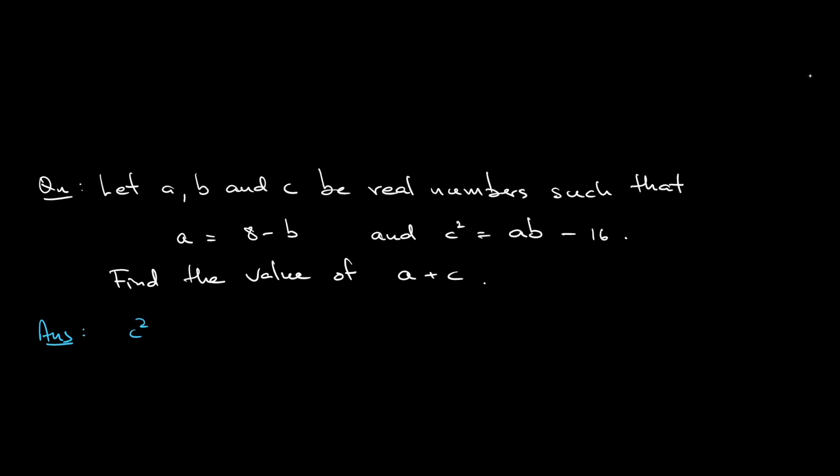You have c square is equal to ab, minus 16. You have a in terms of b. So, instead of having a, substitute a with 8 minus b, multiply that by b, minus 16. Expand this out, you will get minus b square plus 8b minus 16.